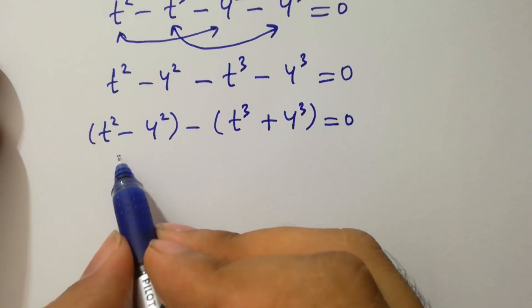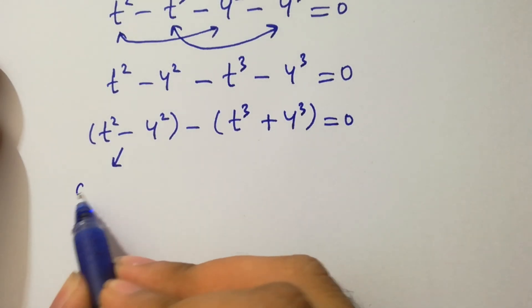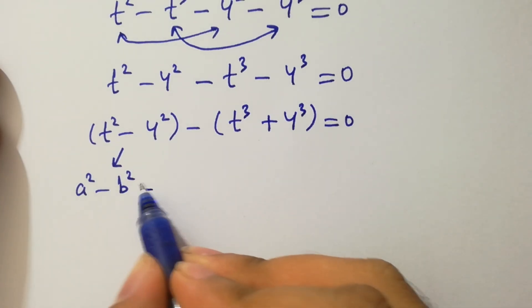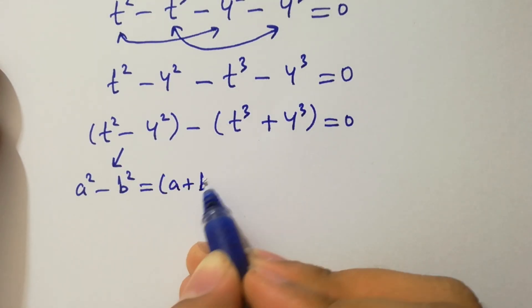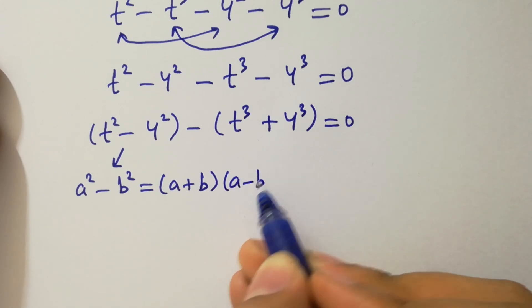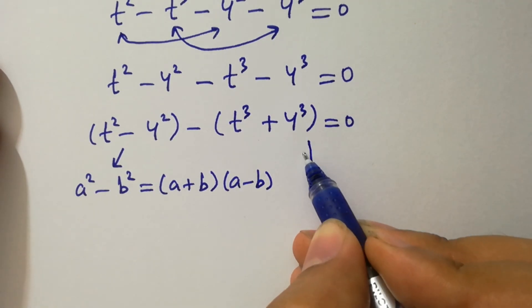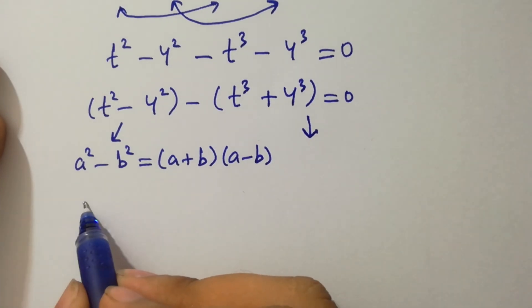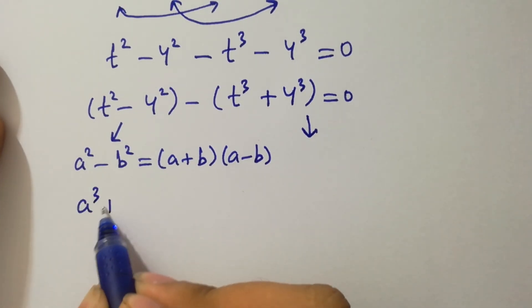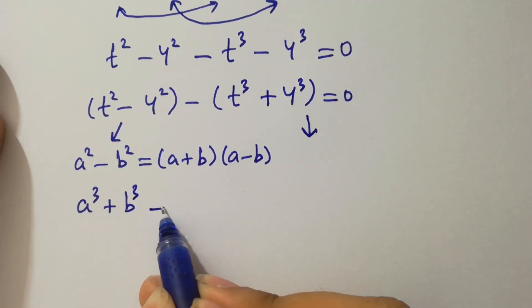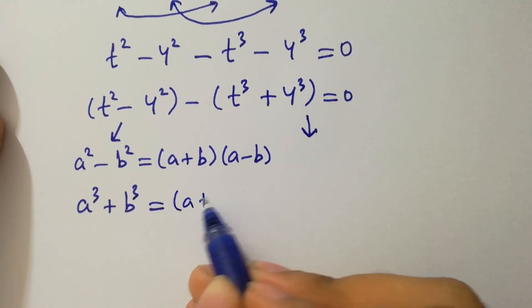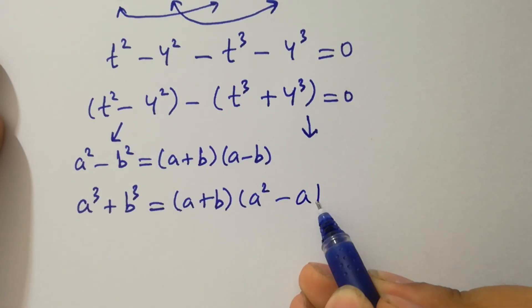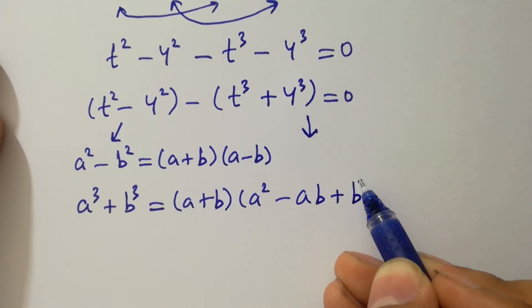We have here, and common we have t cubed plus 4 cubed equal to 0. By this we know the formula of a squared minus b squared, which is equal to a plus b times a minus b. And by this we know the formula of a cubed plus b cubed, which is equal to a plus b times a squared minus ab plus b squared.